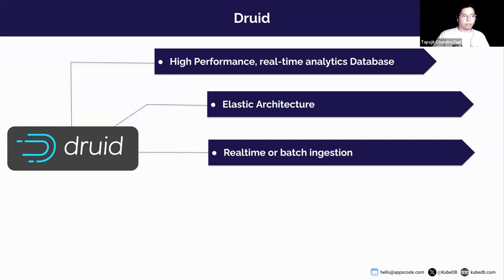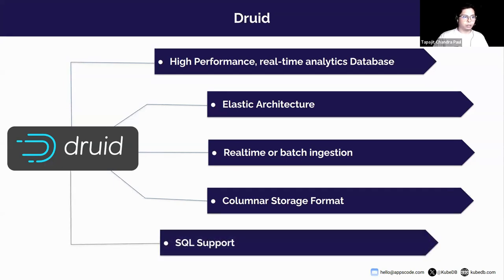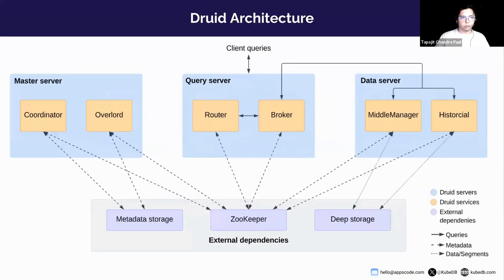Druid supports both real-time and batch ingestion. Ingested data is immediately available for querying right after ingestion. Druid also uses columnar-oriented storage, which means it only loads the exact columns needed for a particular query, improving query speed considerably. Additionally, Druid supports SQL, so developers and analysts can easily use the familiar SQL API.